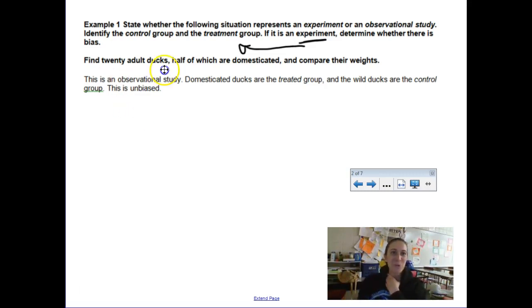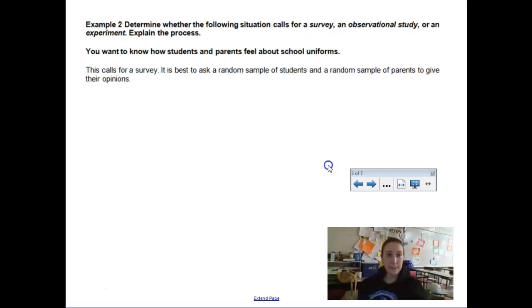Let's just talk about control treatment group if it's an experiment. This one's already done for you: 20 ducks, half of which are domesticated, and you compare their weights. I didn't do anything to make these ducks fat or skinny, I just found 20 of them. I made sure that 10 were wild ducks and 10 were like ducks on a farm and I weighed them. So this is an observational study.